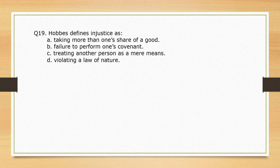Hobbes defines injustice as — options: taking more than one's share of a good; failure to perform one's covenant; treating another person as a mere means; violating a law of nature. The correct option is: failure to perform one's covenant.